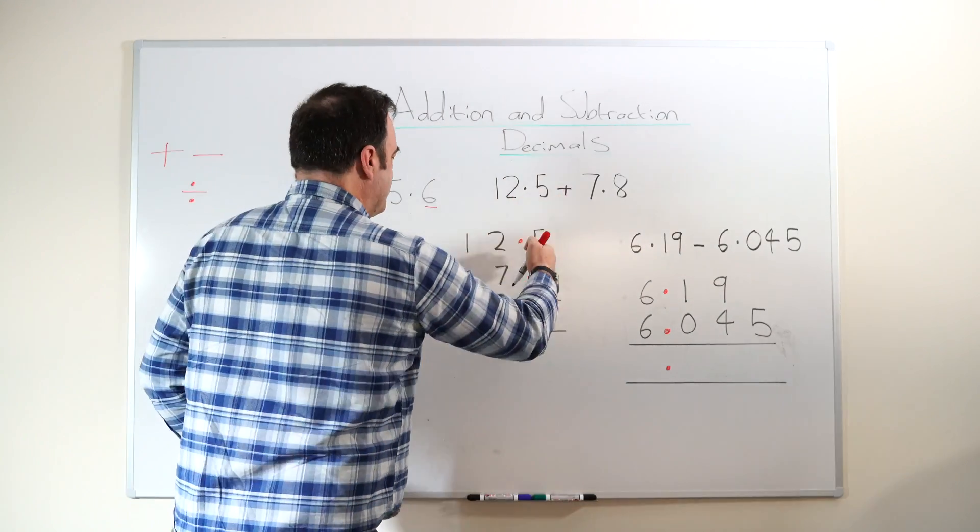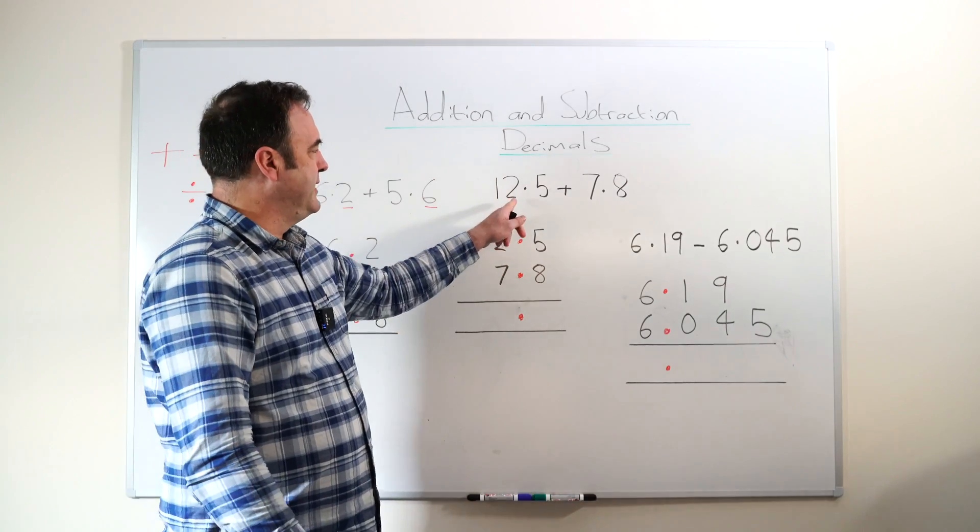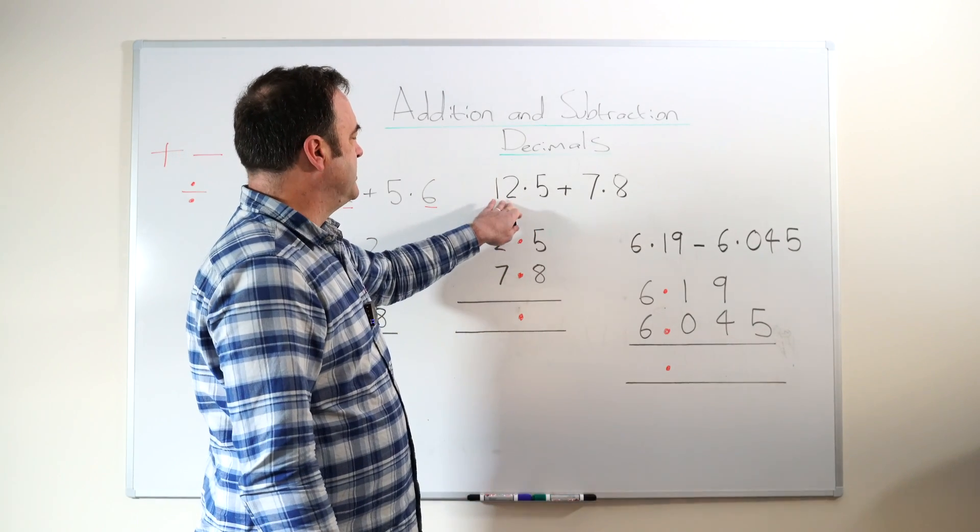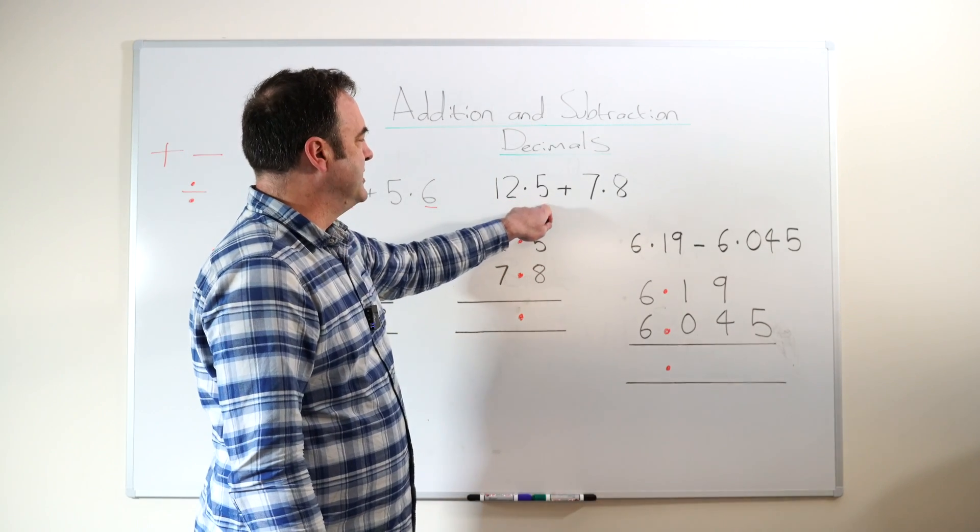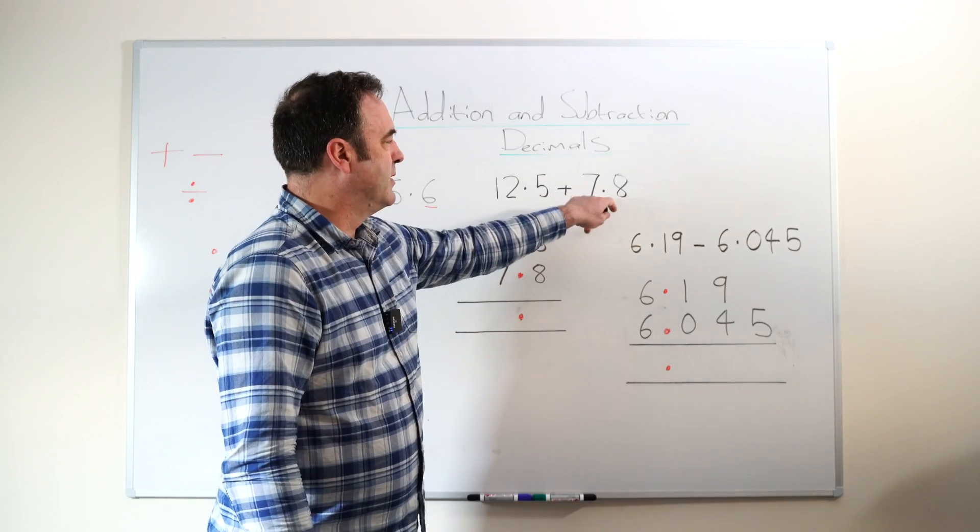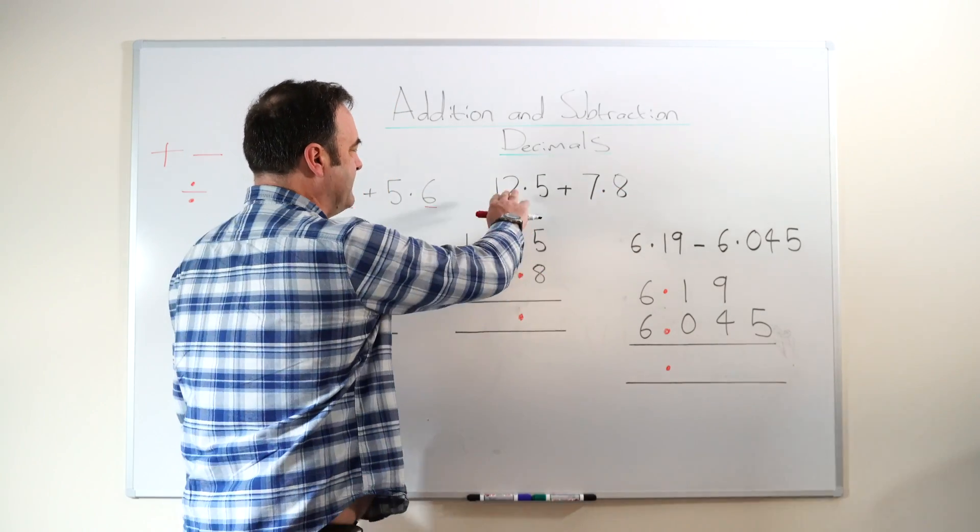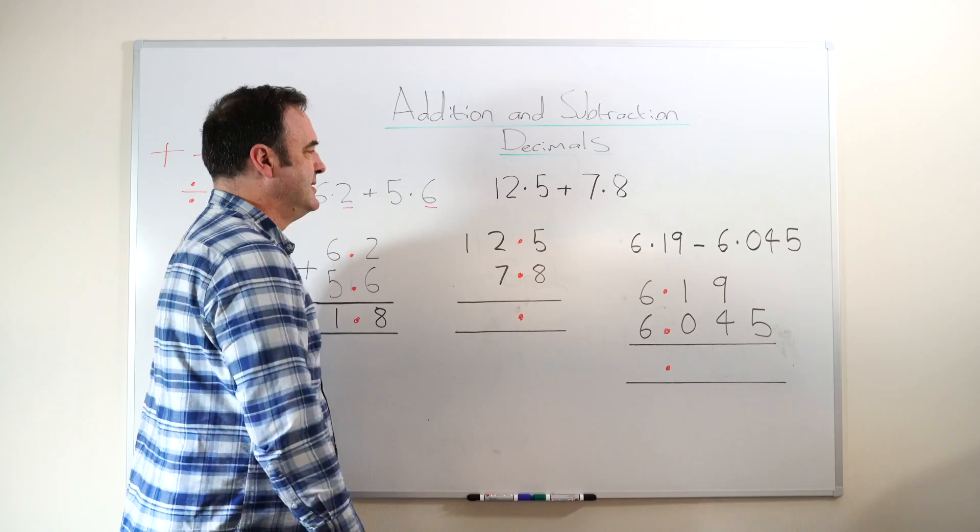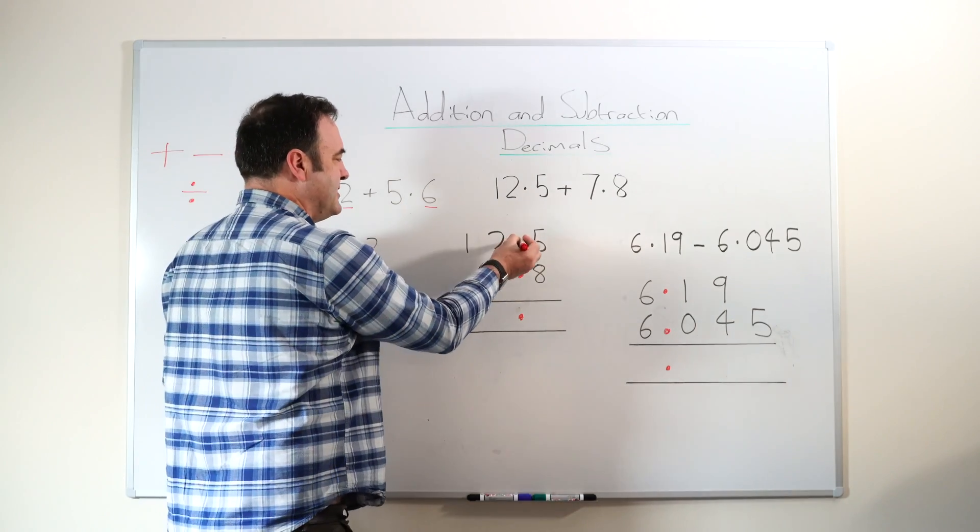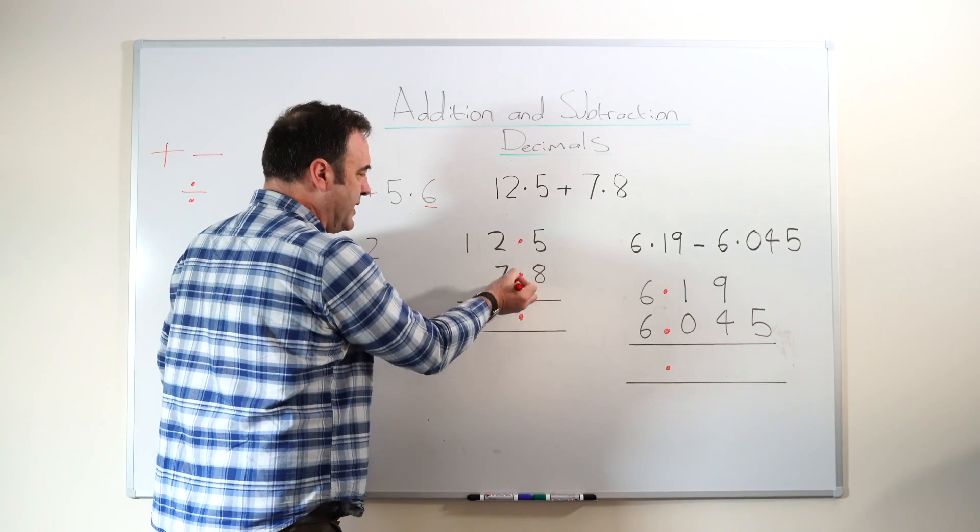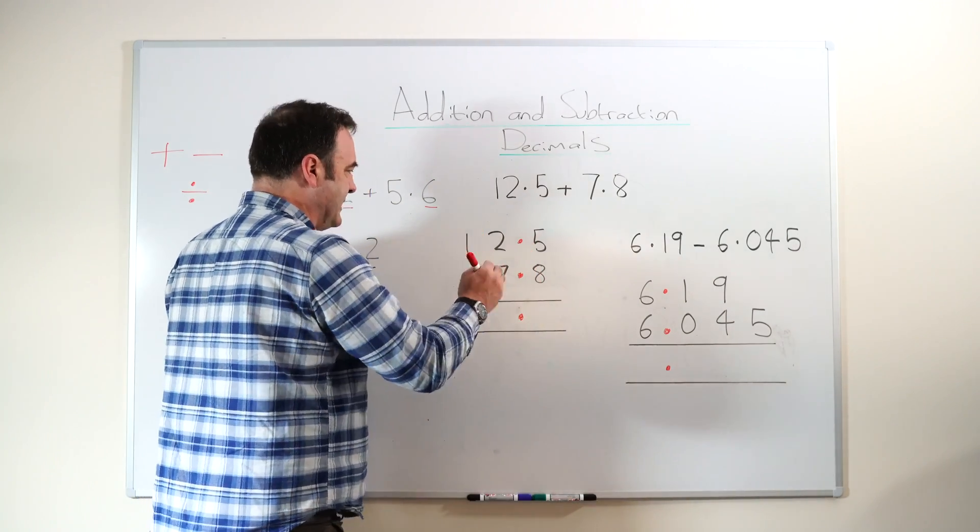Here is where children start to come unstuck, it's where you've got two digits here, decimal point, one digit, add one digit, decimal point, one decimal place, so you've got a different number of digits. What we must do is, as I said before, align with the decimal points, that's the key thing.